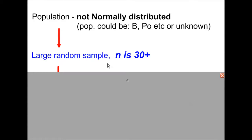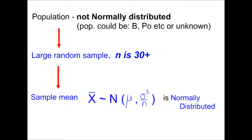We take a large random sample from this population, and the definition of a large sample is at least 30. The sample mean will be normally distributed with the same mean as the population mean, but with a modified variance. You take the population variance — that's sigma squared — and divide it by n, where n is your sample size.